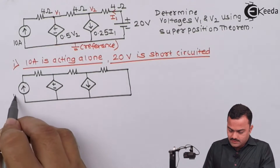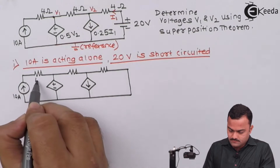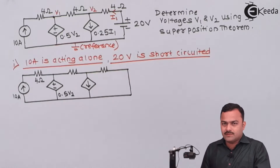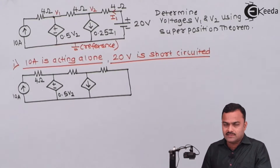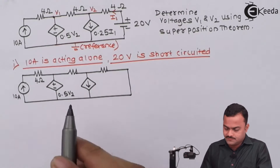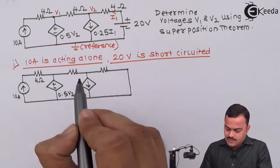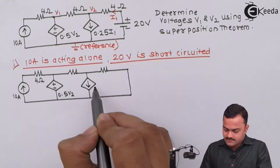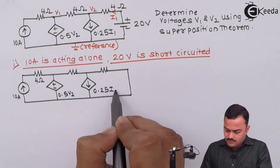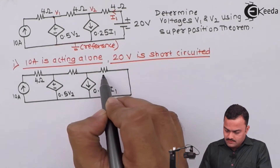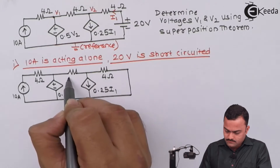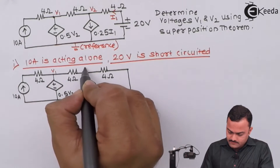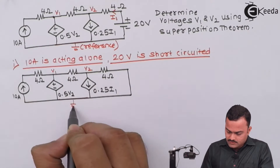After shorting the 20 volt source, we get a circuit with the 10 ampere source, a 4 ohm resistor, and the dependent source 0.5·v2. We will keep the notation as v1 and v2 for now — we will consider v1' and v2' only at the end to avoid confusion. There is also a dependent current source 0.25·i1, and another 4 ohm resistor. We take this node voltage as v1 and v2 as the reference.